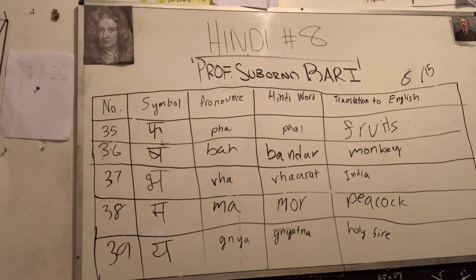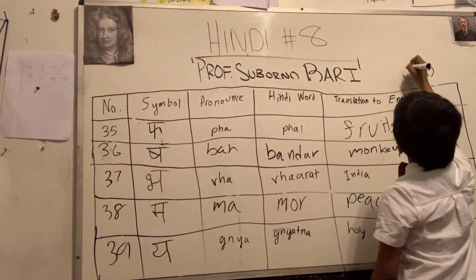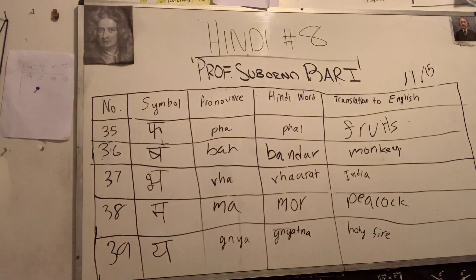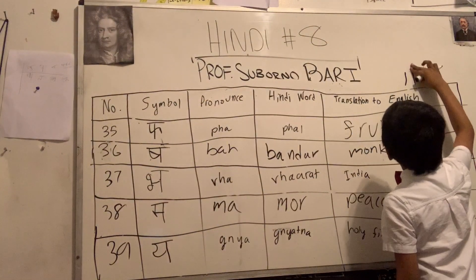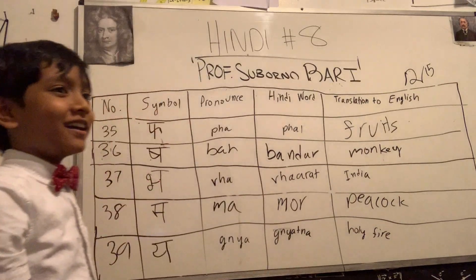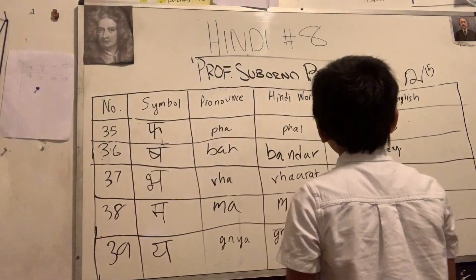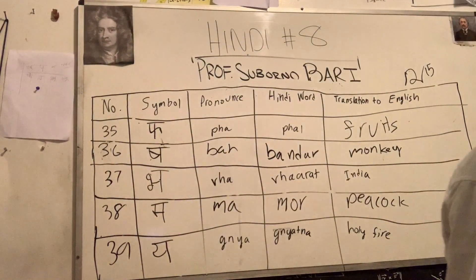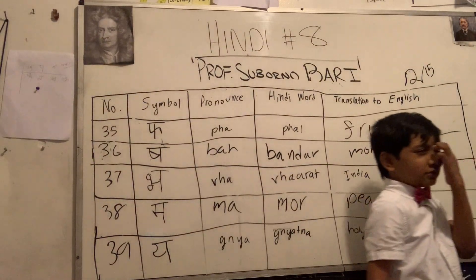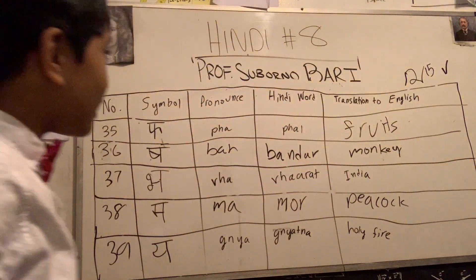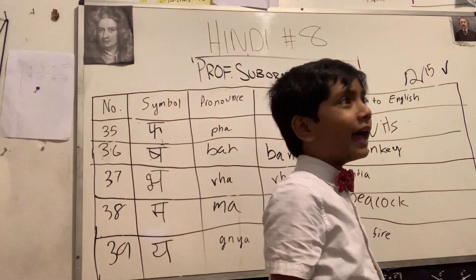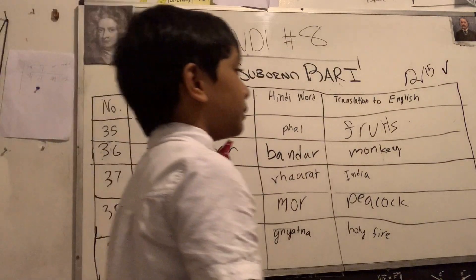Next one is 'Ma' for 'Mor,' or peacock. And finally, what is that letter? The student says 'Ginya' or 'Ginyat,' or holy fire. The professor says it's actually 'Na' for 'Na' — I told you that. And you should know your English pronunciation. So you get 80% — 12 out of 15. Technically passed.